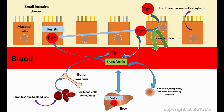The amount of iron transported from the mucosal cells to the rest of the body depends on need. If body stores of iron are high, less iron is transported from the mucosal cells to the tissues. If iron stores are low, a more significant percentage of the iron absorbed into the mucosal cells is transported to tissues in need of iron.